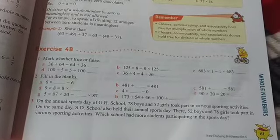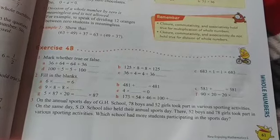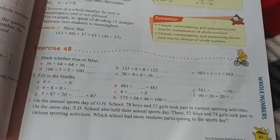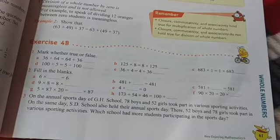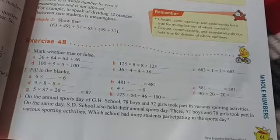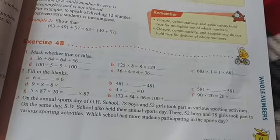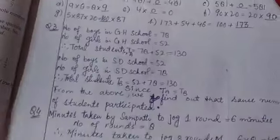So we have to do the third question. It is on the annual sports day of GH school. 78 boys and 52 girls took part in various sports activities. On the same day, SD school also held their annual sports day. There, 52 boys and 78 girls took part in various sporting activities. Which school has more student participation in the sports day?